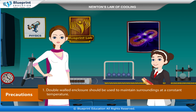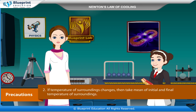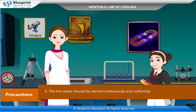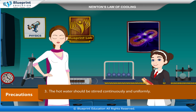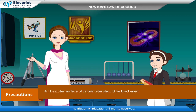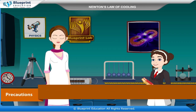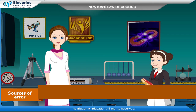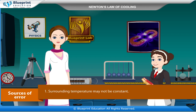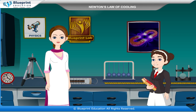Precautions: A double-walled enclosure should be used to maintain surroundings at a constant temperature. If the temperature of surroundings changes, take the mean of initial and final temperature of surroundings. The hot water should be stirred continuously and uniformly. The outer surface of the calorimeter should be blackened. The lid should be airtight. Sources of error: Surrounding temperature may not be constant. The lid may not be airtight.